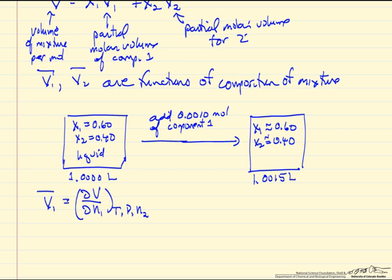Well the partial molar quantity is the change in the volume for a change in the number of moles of component one, where we're keeping constant temperature, pressure, and number of moles of component two. So notice in this problem, we've added component one, the number of moles of component two is the same before and after.